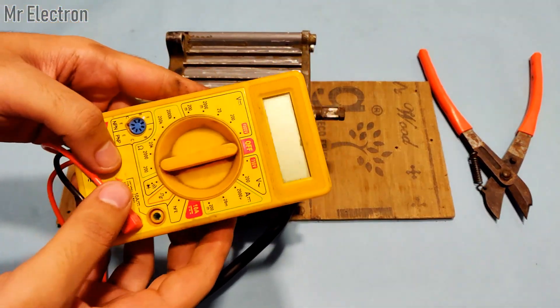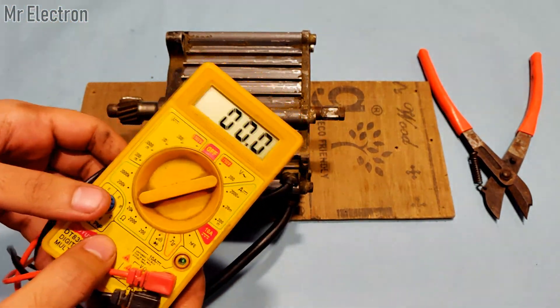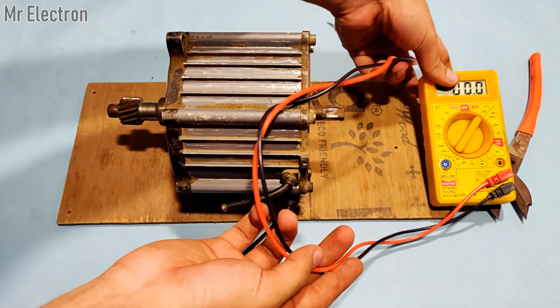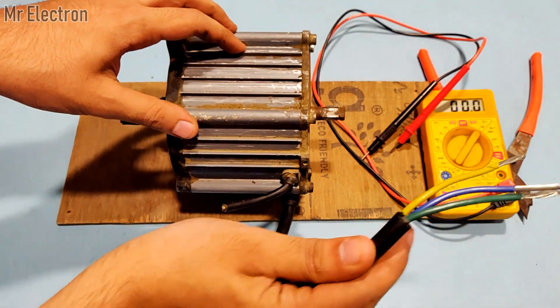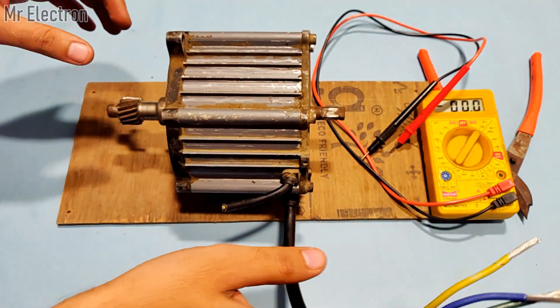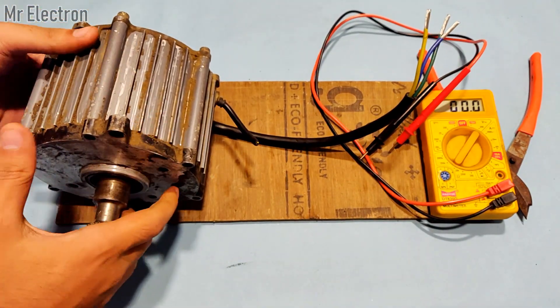The armature windings of this BLDC motor are star connected and the generated output from a BLDC motor is always alternating. You can see that there are three wires, so it is three-phase alternating current.